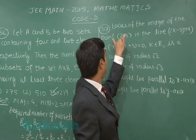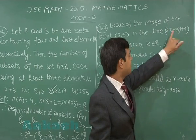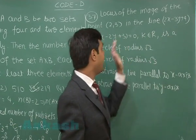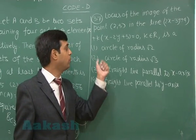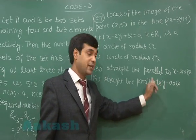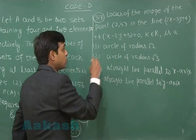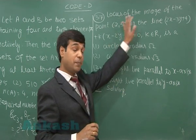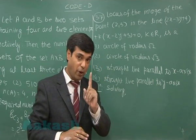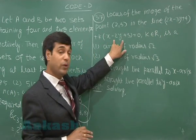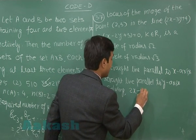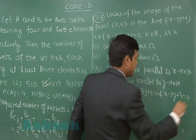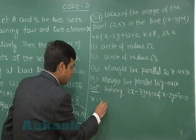Locus of the image of the point (2, 3) in the line 2x minus 3y plus 4 plus k times (x minus 2y plus 3) equals 0, where k is any real number. This equation represents a family of lines passing through a fixed point, obtained by solving L1 equals 0 and L2 equals 0. Solving 2x minus 3y plus 4 equals 0 and x minus 2y plus 3 equals 0, we obtain x equals 1, y equals 2.